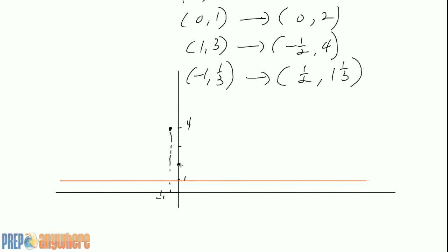What's happening here? It's going up this way. Usually it goes down this way, but it's going up. And then instead of 1, it's 1/2. (1/2, 1 1/3) is right here.